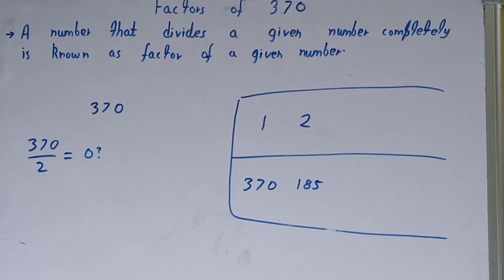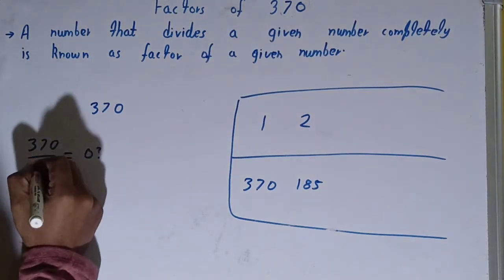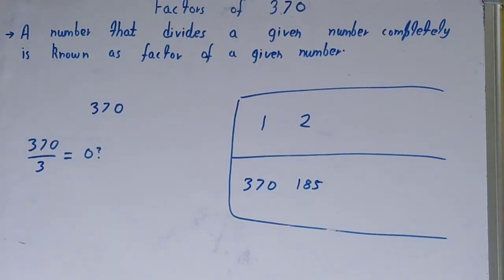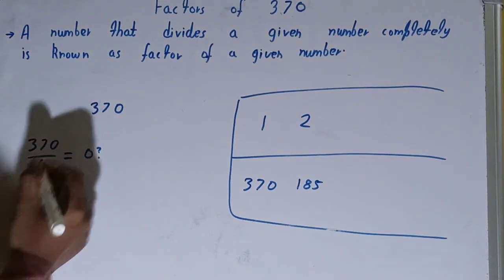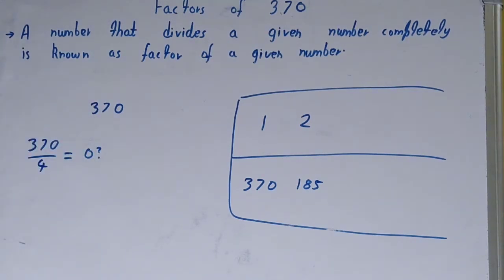After 2, we will check with 3. Now is the number 370 divisible by 3? 3 into 12, 36, 10. Not possible. Let's check with 4. 4 into 90, 36, 10. Again not possible.